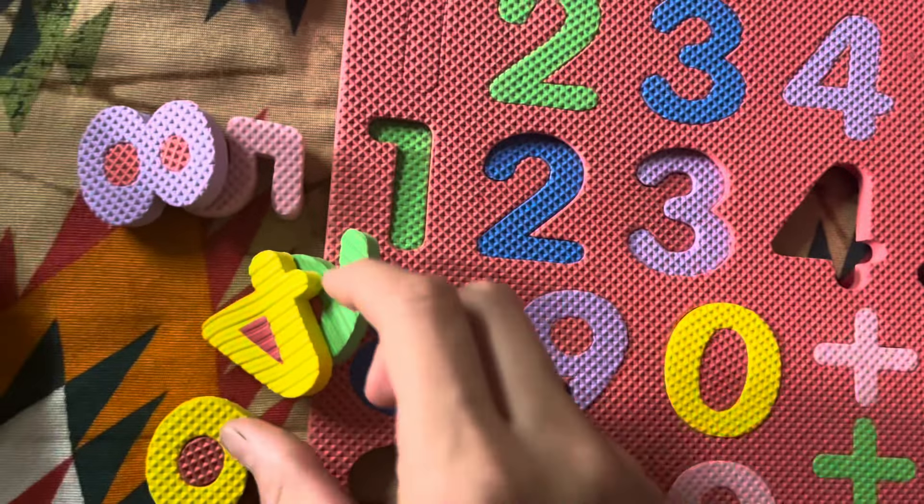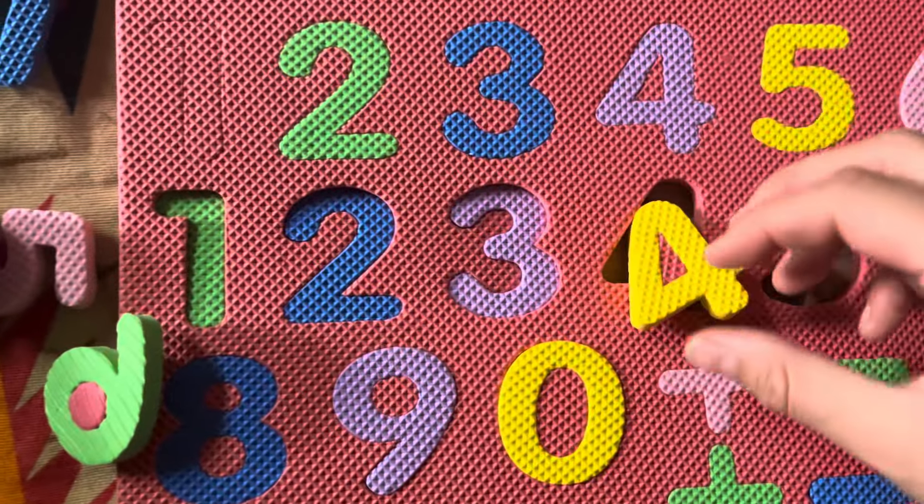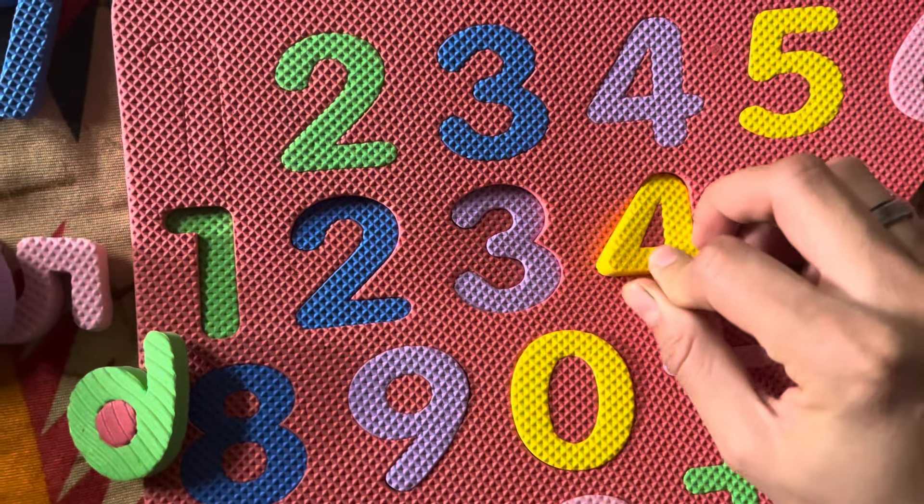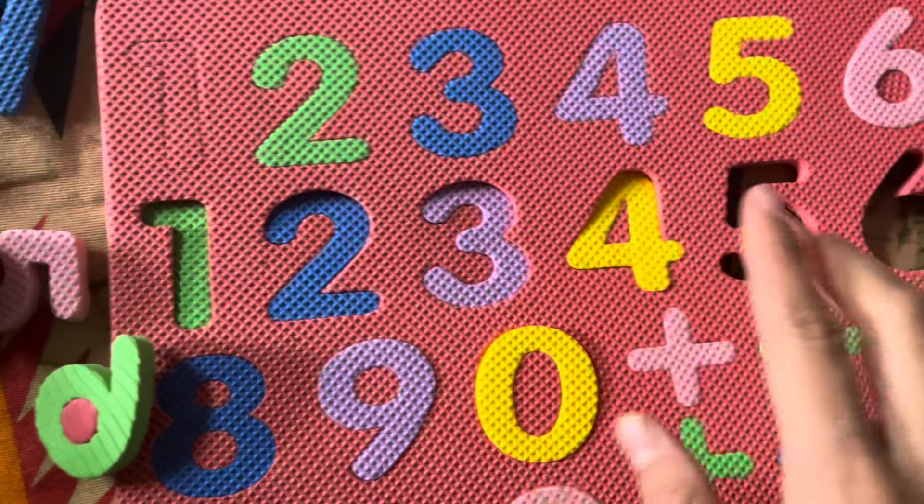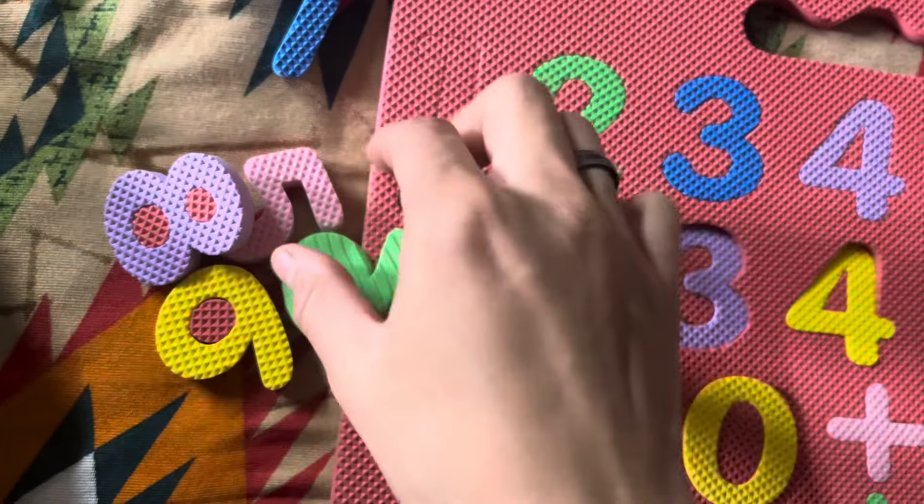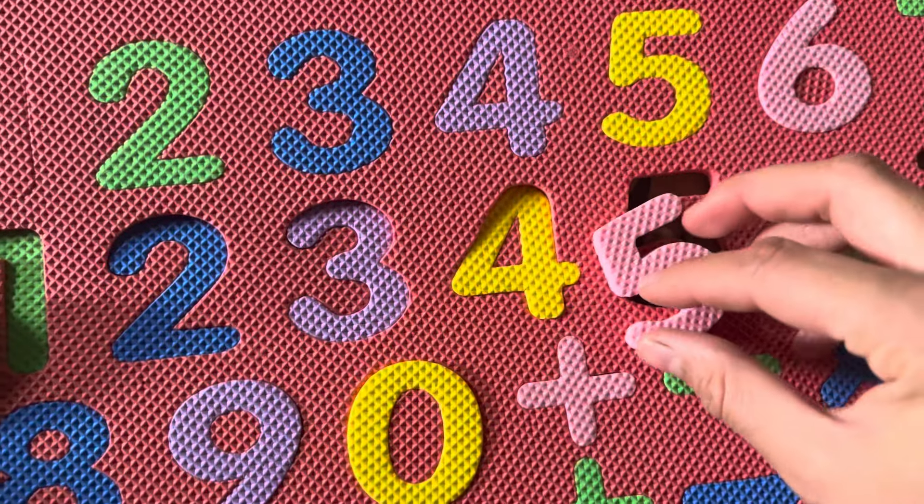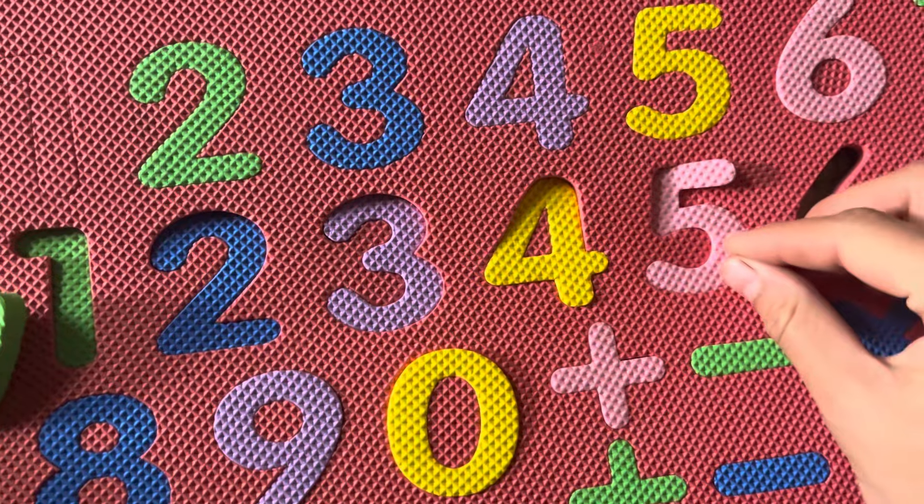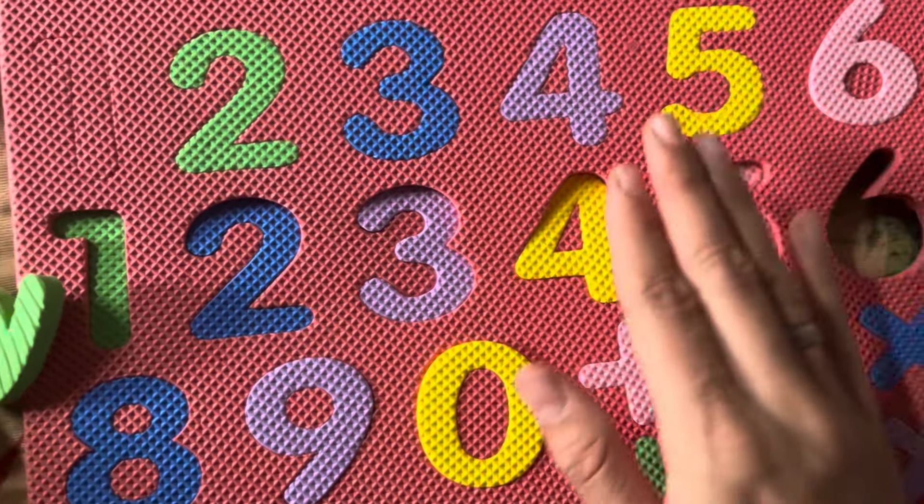Number 4. Here is number 4. We will put it into the space. Number 4. 5. Where is 5? Here number 5. What is the spelling of 5? F-I-V-E, 5.